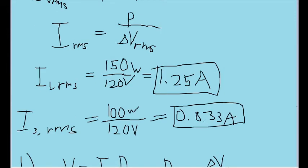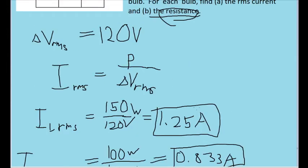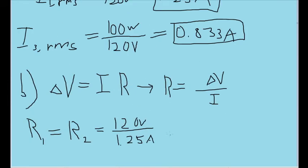Now as we discussed in part A, the current in both lamps 1 and 2 are the same. So we can solve for the resistances for both lamps 1 and 2 using the same expression, where we take the potential difference, 120 volts, and divide it by the current for those two lamps, 1.25 amps. This comes out to be a resistance of 96.0 ohms.